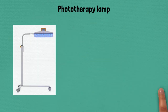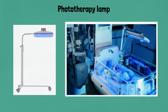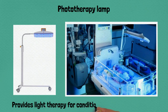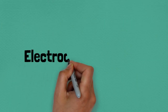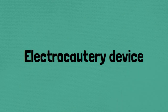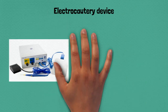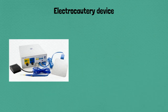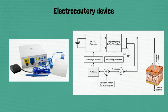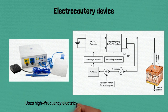Seventy-two: phototherapy lamp, provides light therapy for conditions like jaundice in newborns. Seventy-three: electrocautery device, uses high-frequency electrical currents to cut or coagulate tissue.